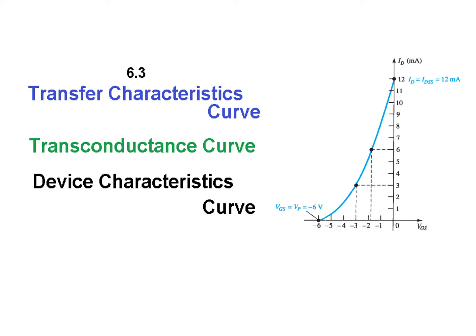This is the second video in the JFET series. Here we will be discussing what is called the transfer characteristics curve. It is also called the transconductance curve and is also known as the device characteristic curve.